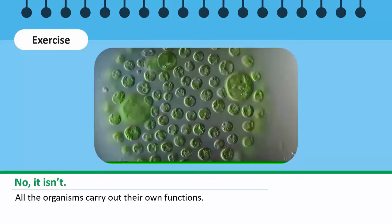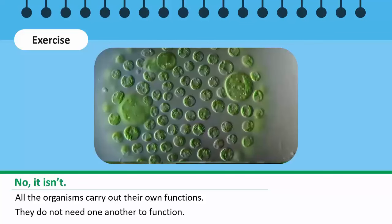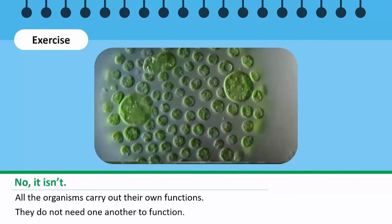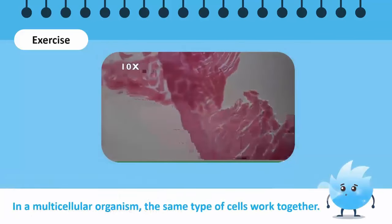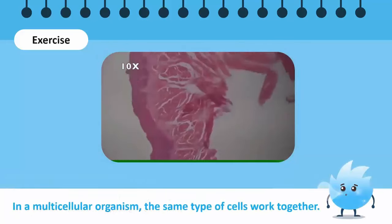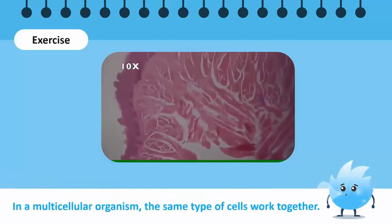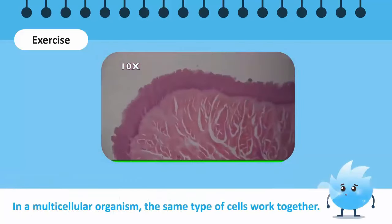All the organisms in a group of unicellular organisms carry out their own functions separately. If one cell dies, the others can still live on, as they do not need one another to function. In a multicellular organism, the same type of cells work together to perform a single function.